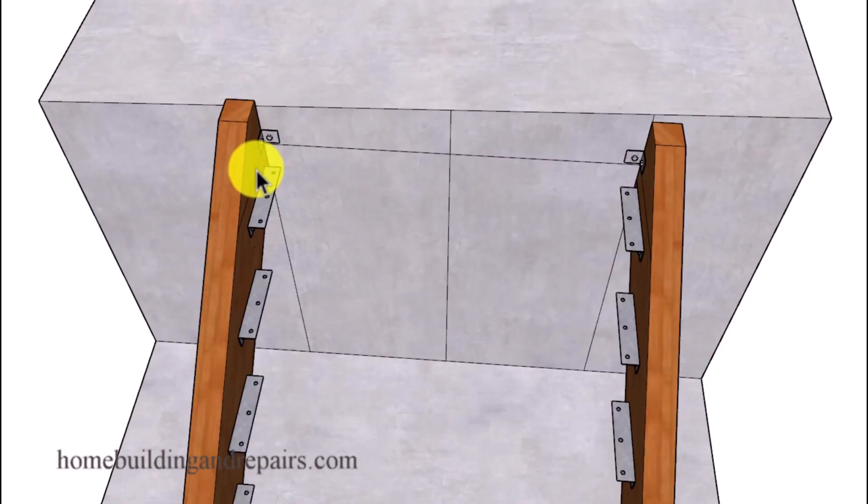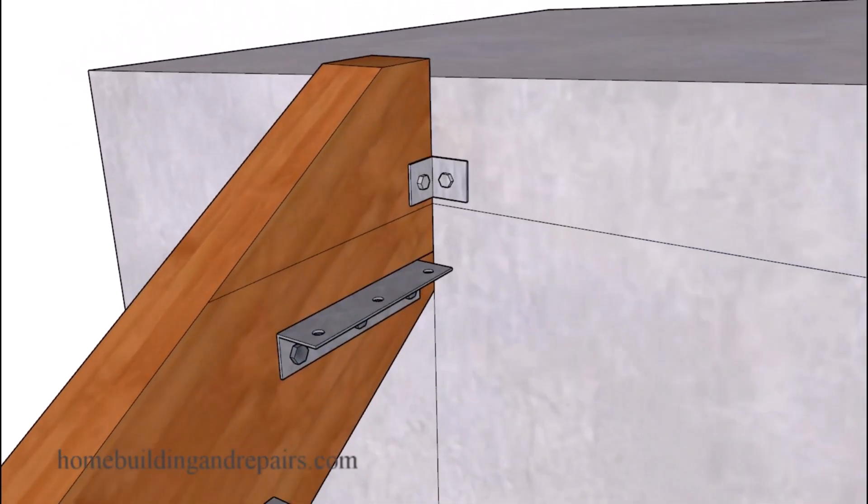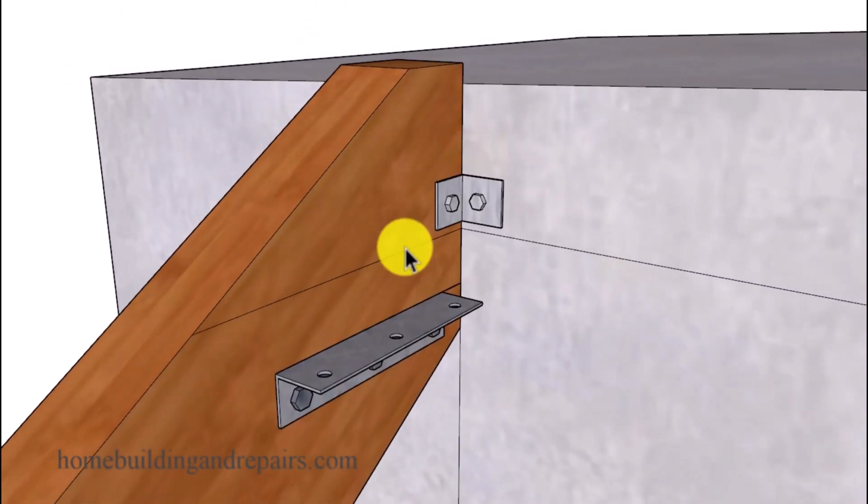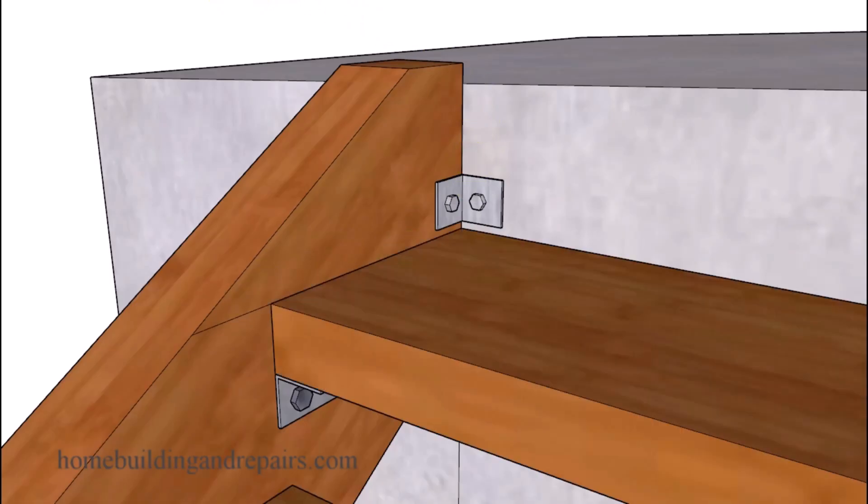You could actually position the stair stringers, if that would work better for you, just don't cut the tops. Let this surface of the stringer run straight up, do not cut this, and then you could simply mark it if that would work better. If not, then you're simply going to measure from here, the top of the tread to the top of the floor surface, and then do the same on the other side.